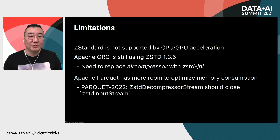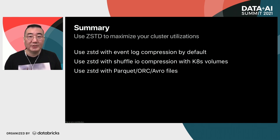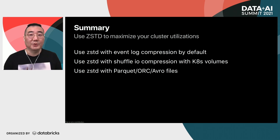Let's wrap up. The Apache Spark community is improving Zstandard support more and more for Apache Spark 3.2. Spark is revisiting Zstandard codecs in various areas to maximize cluster utilization. For event log, Apache Spark 3.2 starts to use Zstandard by default. For Kubernetes environments, it can unblock the size limitation of local container storage. For long-term storage, Apache Spark 3.2 supports Zstandard in Parquet, ORC, and Avro without any limitation. Thank you.